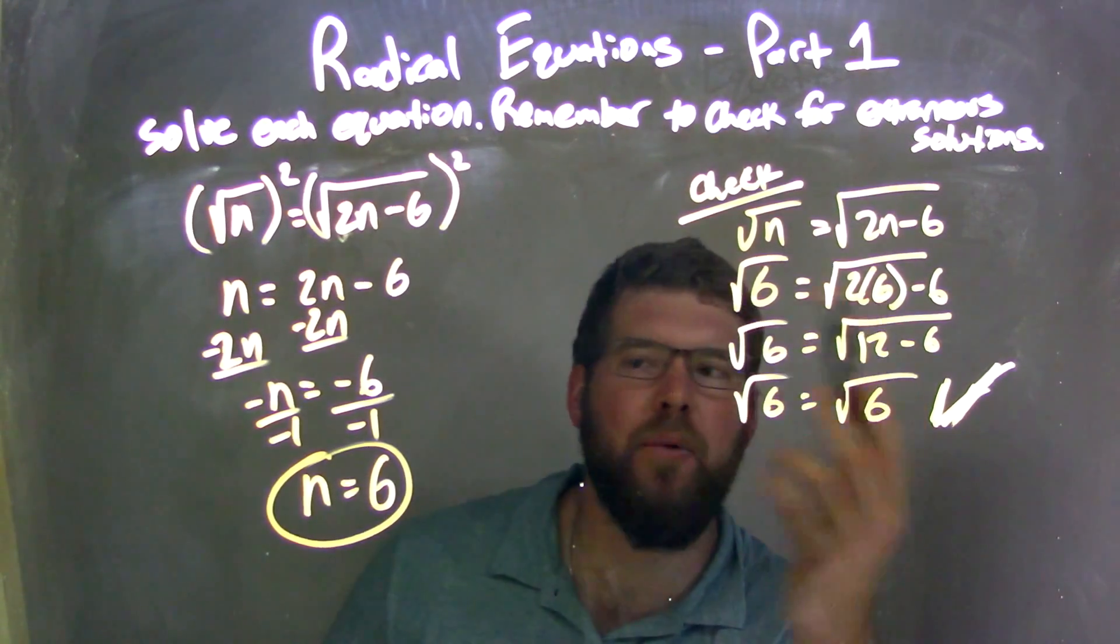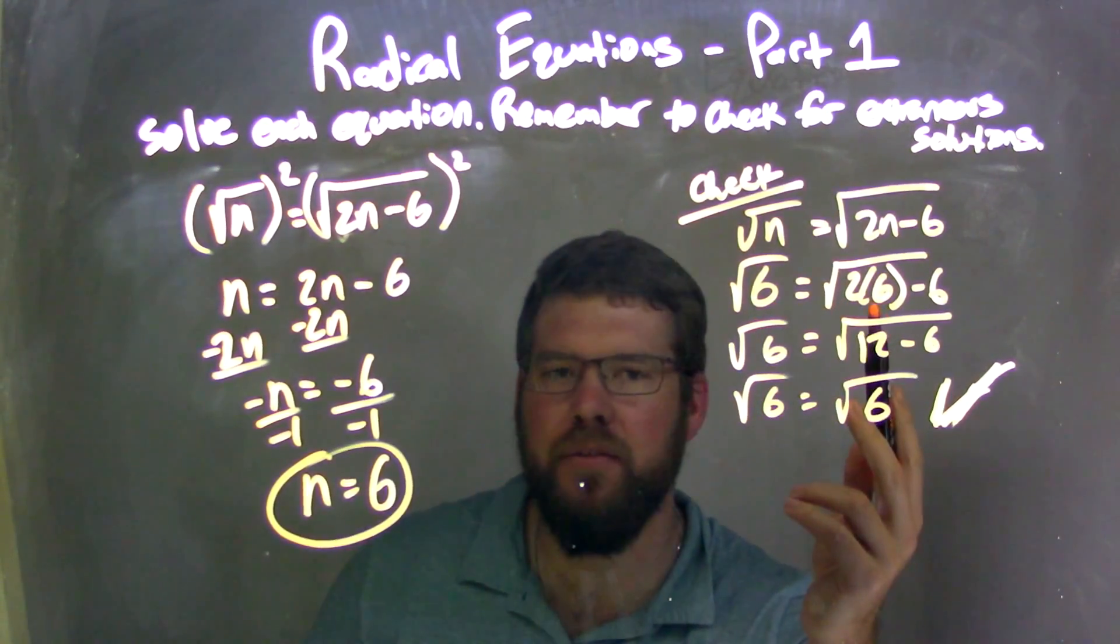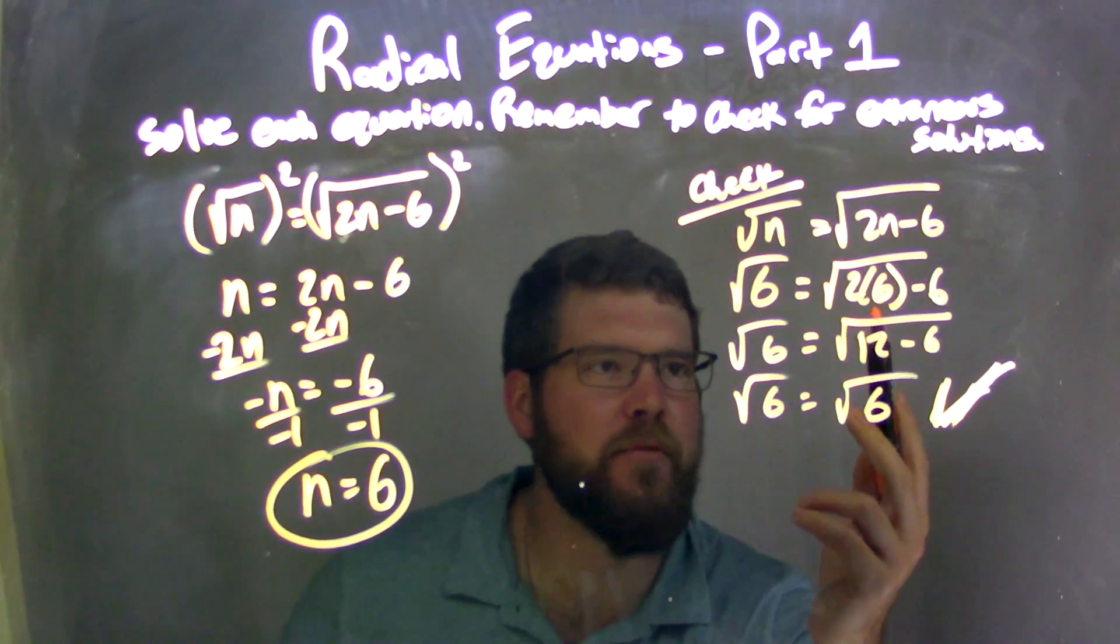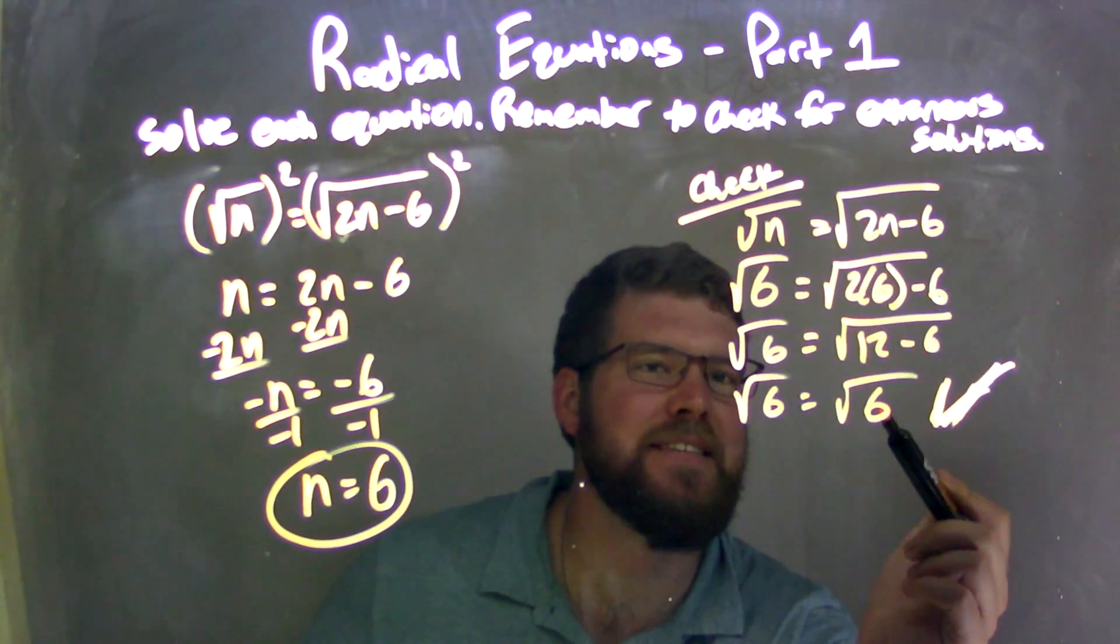I need to check that. So I rewrote my equation and plugged 6 in for both n's. In doing so, I need to simplify 2 times 6, which was 12. 12 minus 6 is 6.